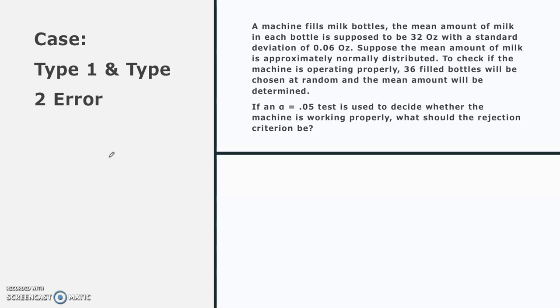We will now try to solve a Type 1 and Type 2 error problem using the following case. Here we have a machine that fills milk bottles. The amount of milk in each bottle is supposed to be 32 ounces with a standard deviation of 0.06 ounces.